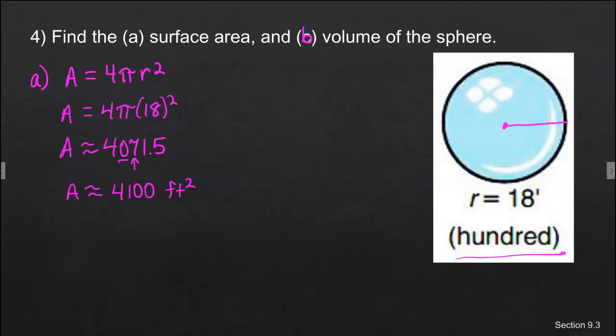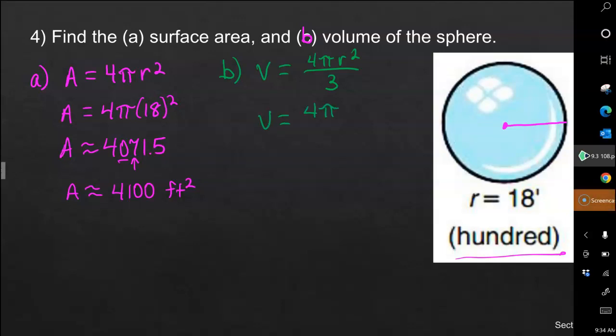Part B, I need to fix my slides here. I'm going to do that before I use it again. So volume is 4πr² divided by 3 for the formula that uses radius. We substitute in our 18, and then calculate carefully. When you calculate this, you should get 24,429.0. So we're going to round that to 24,400 cubic feet, because we are rounding to the hundredths place.